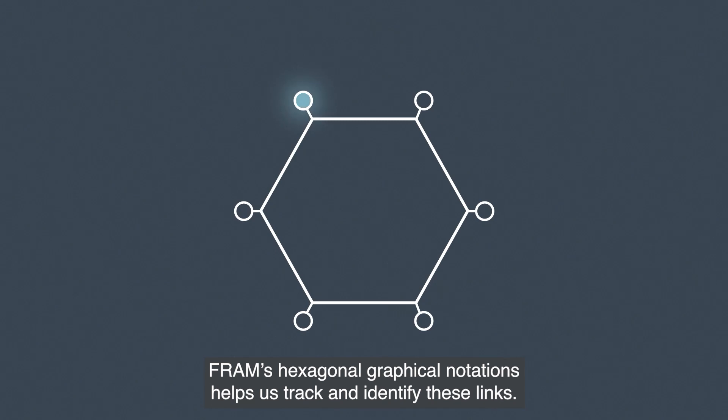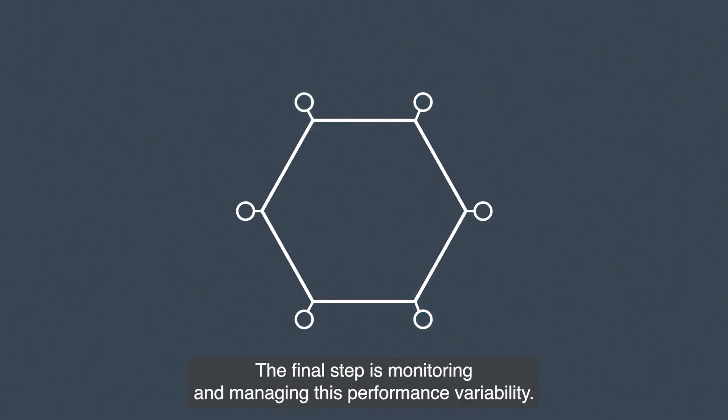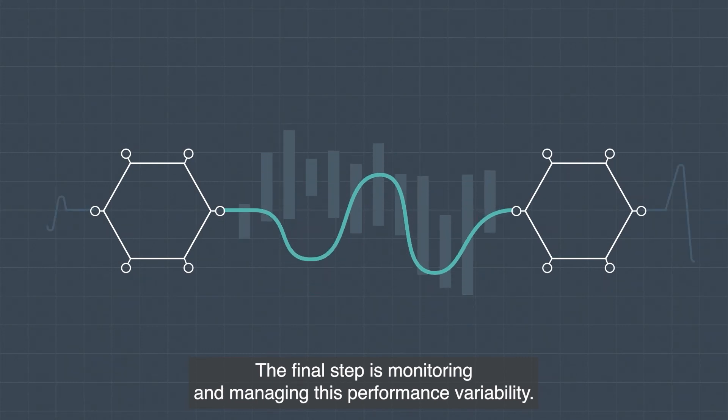FRAM's hexagonal graphical notation helps us track and identify these links. The final step is monitoring and managing this performance variability.